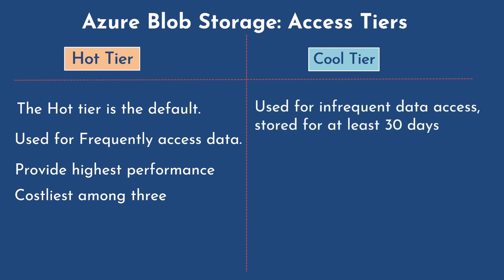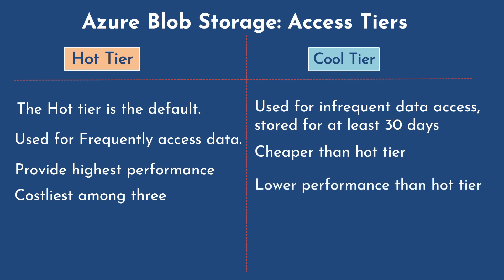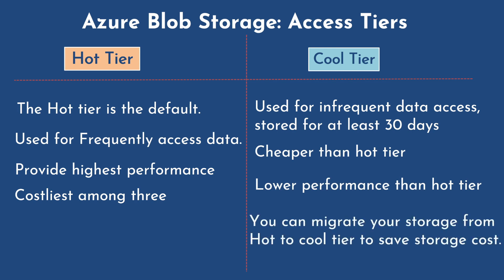Cool tier is used to store infrequently accessed data that must be stored for at least 30 days. It is cheaper than hot tier, but provides lower performance. You can migrate your storage from hot tier to cool tier to save on storage costs, though you do compromise on data access performance.